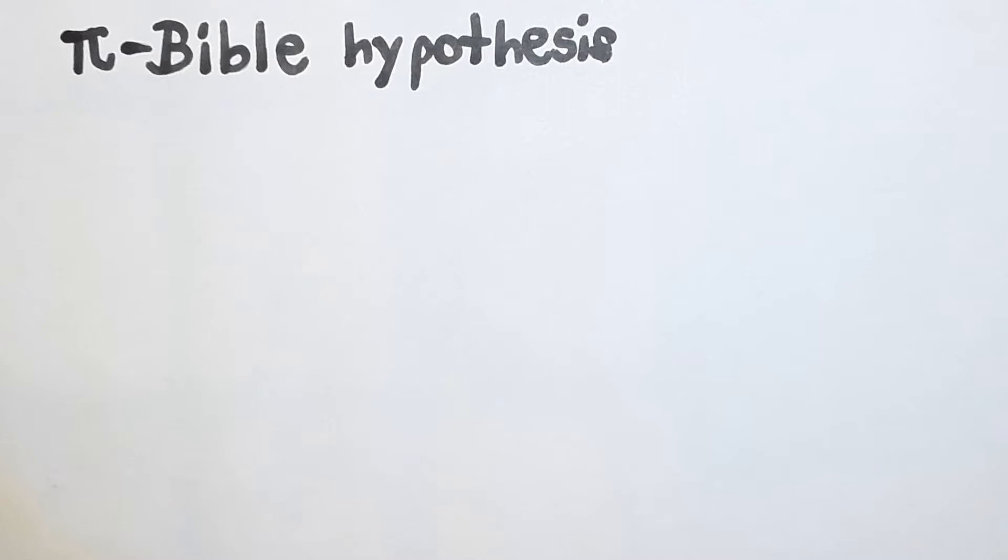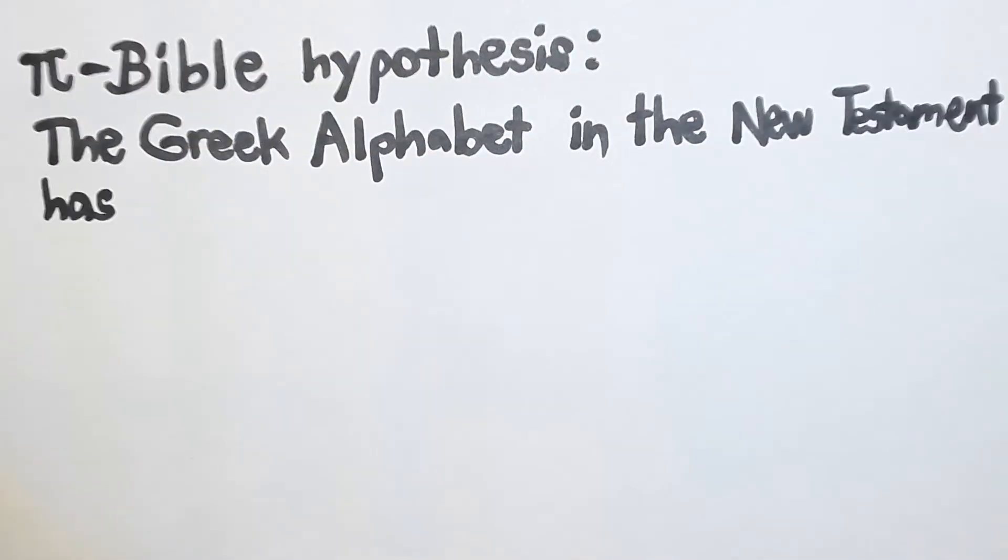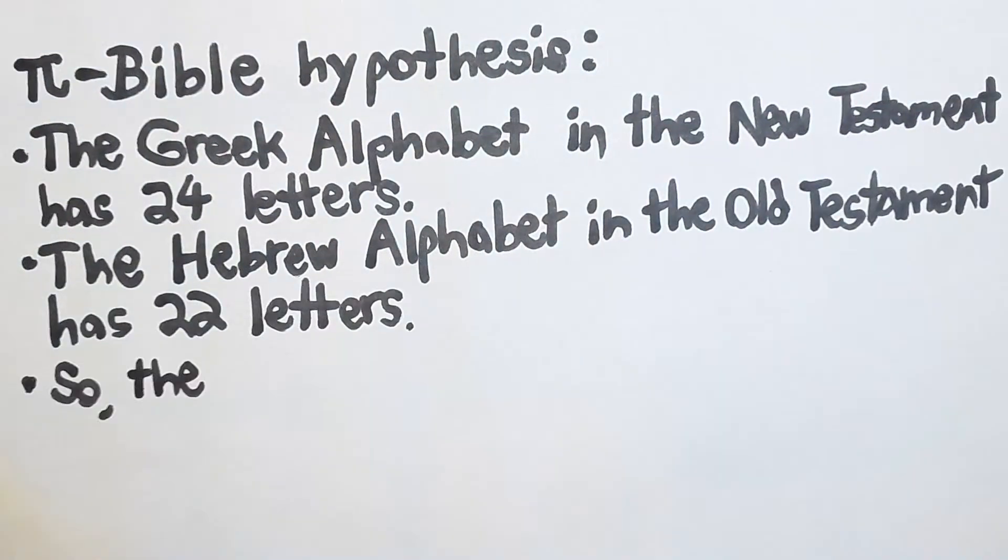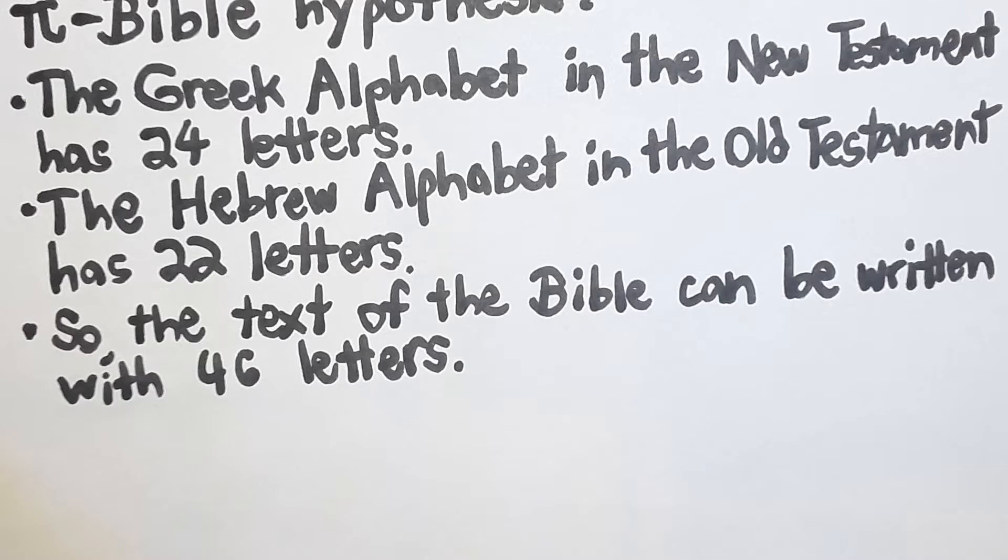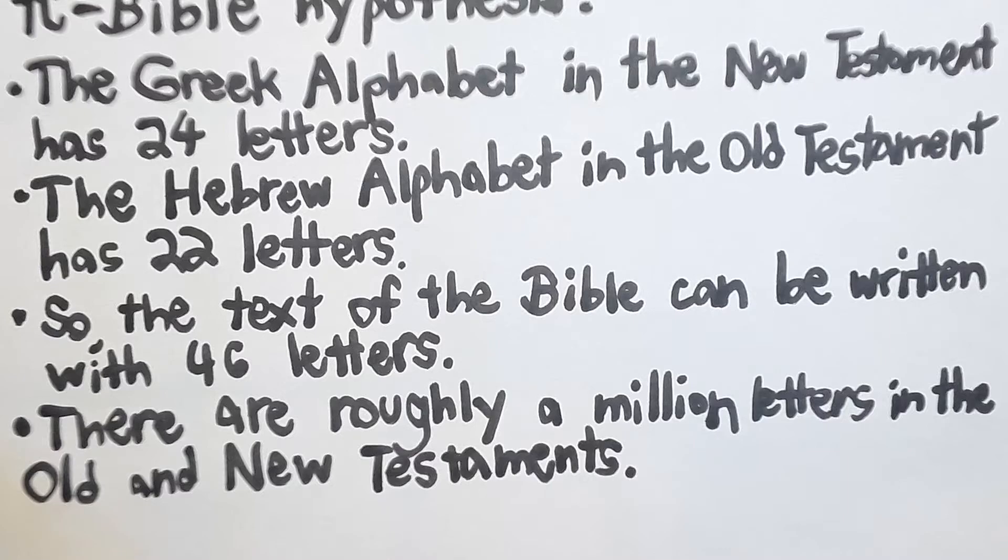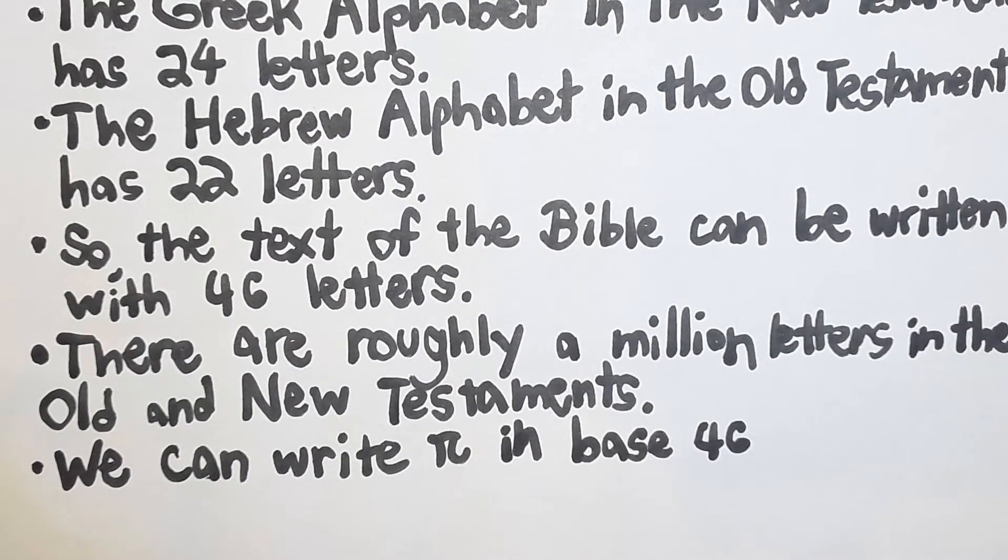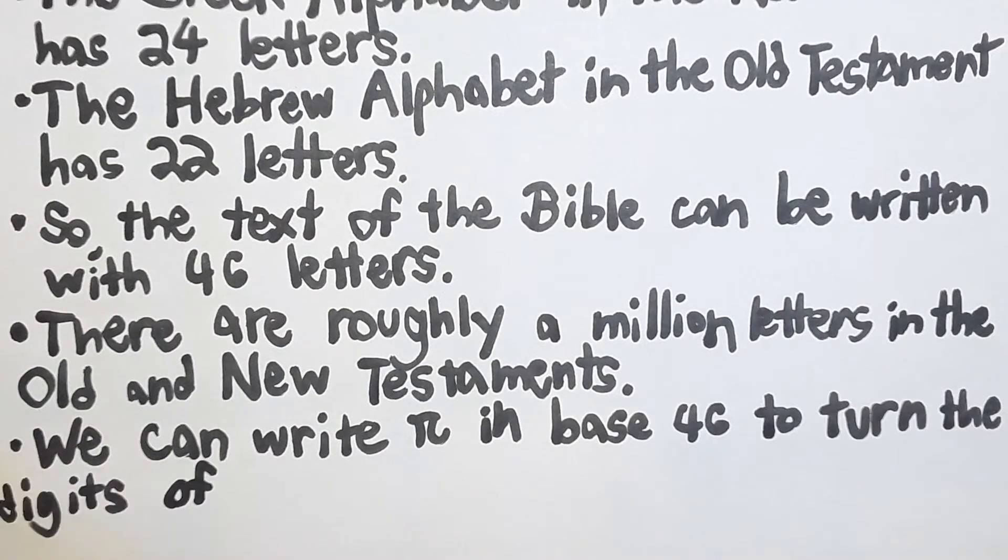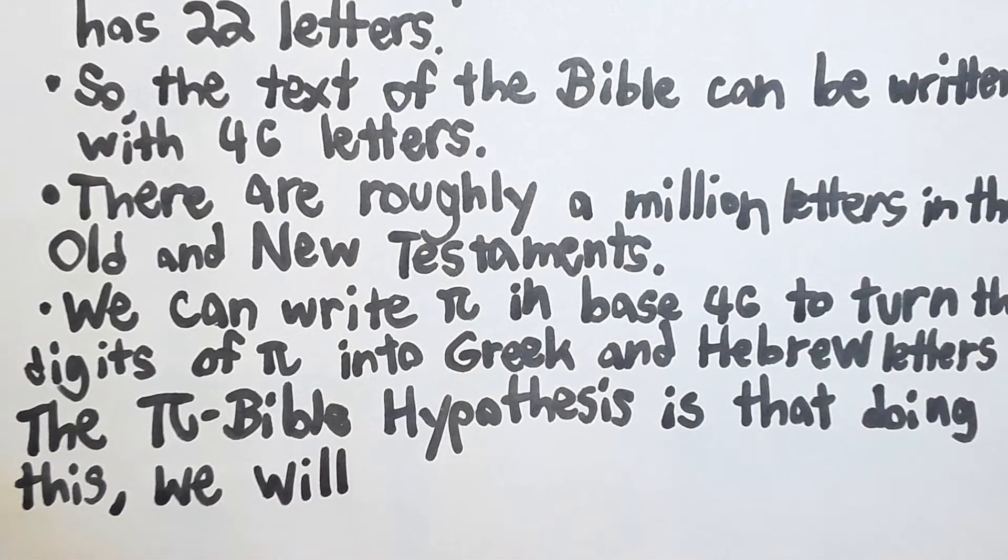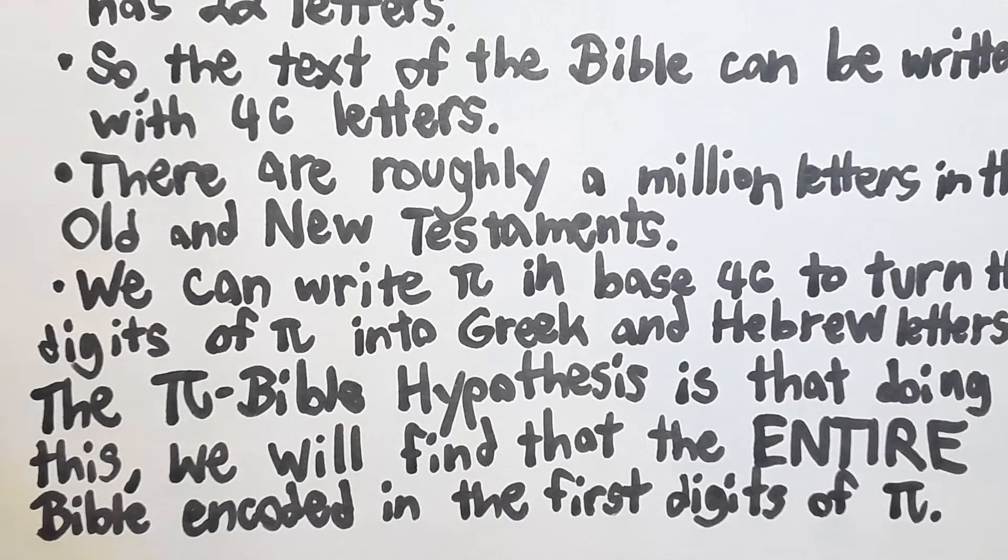A few starting points. The Greek alphabet in the New Testament has 24 letters. The Hebrew alphabet in the Old Testament has 22 letters, so the text of the Bible in its original language can be written with 46 distinct symbols. According to my very rough searches, there are roughly a million letters in the Bible in their original languages. But if the internet lied and the number is different, that shouldn't be super important. We can write pi in base 46. This would be the most natural way to turn the digits of pi into the Greek and Hebrew letters. The Pi Bible hypothesis is, quite simply, that the first million base 46 digits of pi will write out the Old and New Testaments in their entirety.